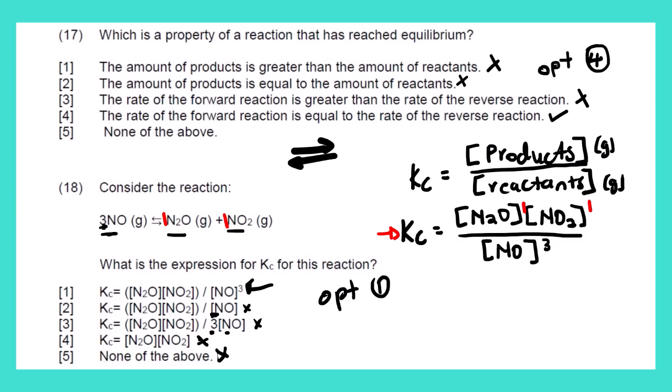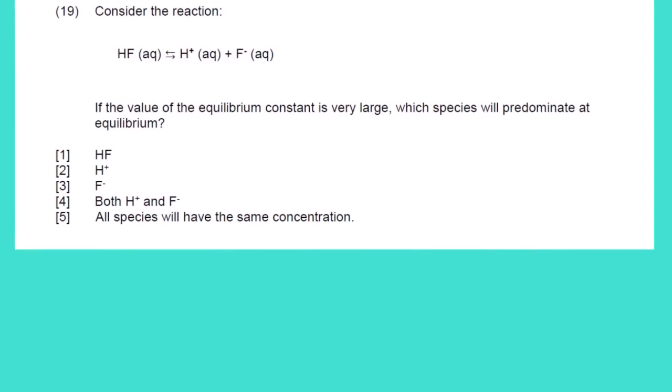We are on question 19: consider the reaction hydrofluoric acid → hydrogen ion plus fluoride ion in aqueous solution. The question says: if the value of the equilibrium constant is very large, which species will predominate at equilibrium? We said Kc equals concentration of products over concentration of reactants. In order for this value to be large, we need a big number divided by a small number.